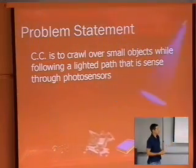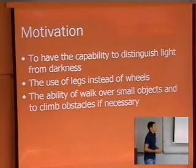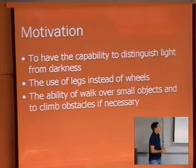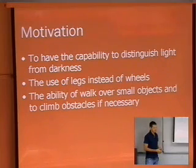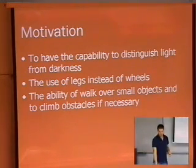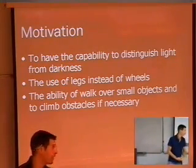As you can see, this is a crude demonstration. Motivation: it is very important for our robot to have the capability to distinguish between light and dark. The use of legs instead of wheels gives it the ability to crawl over small objects and walk over, as you can see here, a magazine, cardboard, or a plastic ramp.